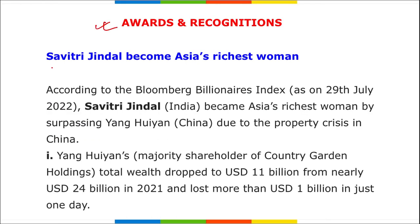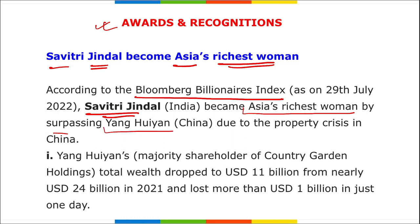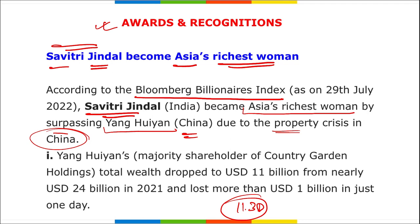As per Bloomberg's Billionaire Index, Savitri Jindal from India became Asia's richest woman by surpassing Yang Huiyan from China, due to the property crisis currently ongoing in China. Savitri Jindal's wealth stands at $11.3 billion. She is India's richest woman and the 10th richest person in India.